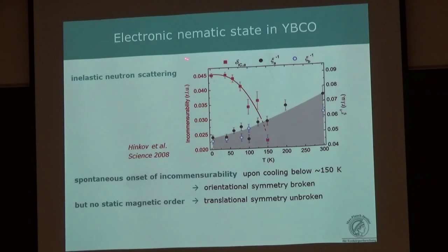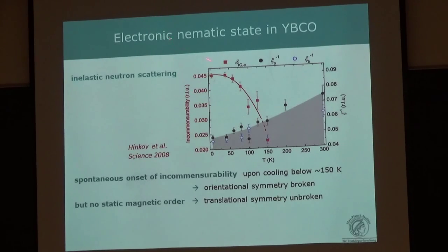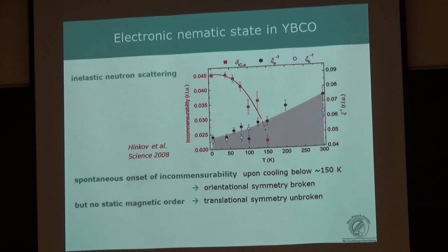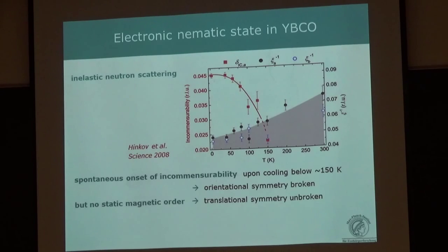When you can still separate these two peaks, the incommensurability follows what looks like an order parameter that goes to zero at a temperature of about 150 K. So even though there is no magnetic order in this material—the translational symmetry is not broken—the rotational symmetry appears to be spontaneously broken in the spin fluctuation spectrum. The spin fluctuation spectrum already has this uniaxial anisotropy at temperatures much above the onset of static magnetic order.